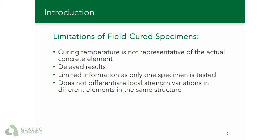Field cured specimens have several limitations. The curing condition of the specimens is not truly representative of the actual concrete element, as the specimens are generally sitting on the side with minimum protection. They could easily undergo lower or higher curing temperatures compared to the actual element. In addition, there is an inherent delay in results as the specimens have to be collected and sent to a lab. Usually only one specimen is sent to the lab, providing limited information, and if the specimen does not break well this could result in inaccurate information. Also, the results do not differentiate between local variations of strength in different locations on the same structure.